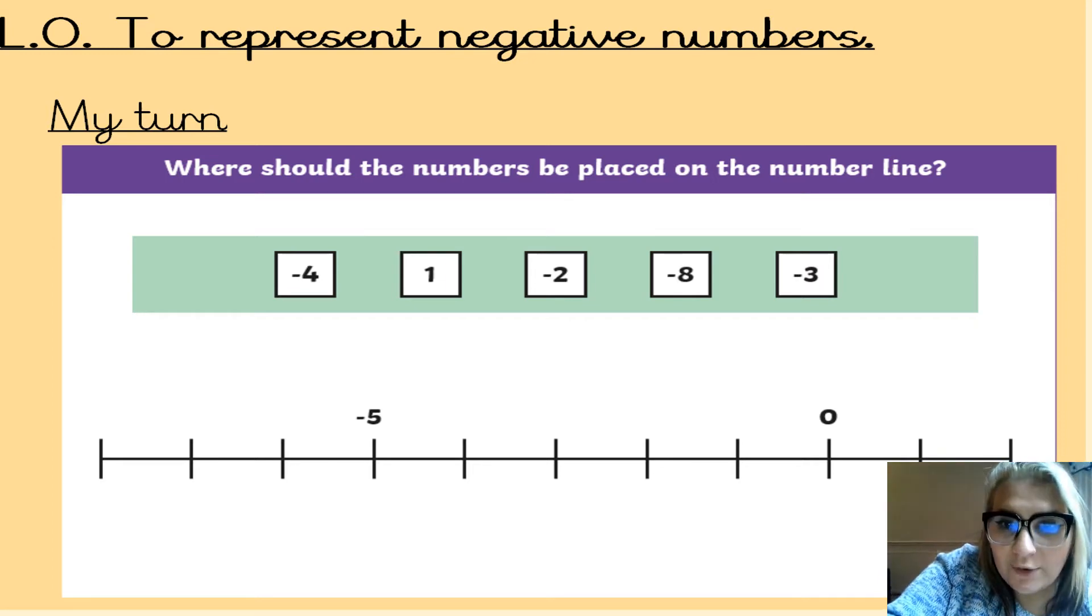So, my zero is here. Do I have any positive numbers in this line? I do. One. So, I know that one goes straight after zero. So, I can cross that off my list. Then, let me look at my next lowest number. Minus two. So, zero. This one would be minus one. So, minus two would have to be here.